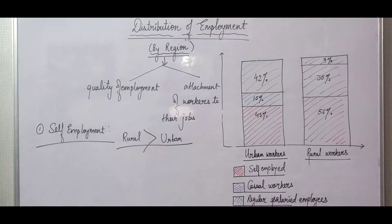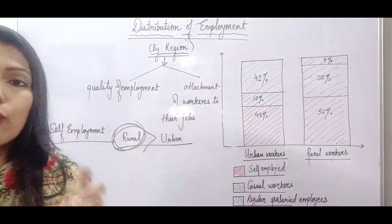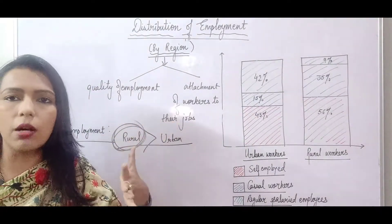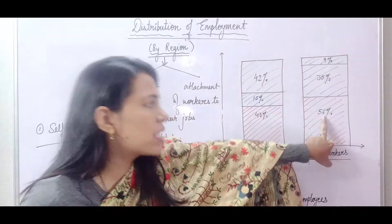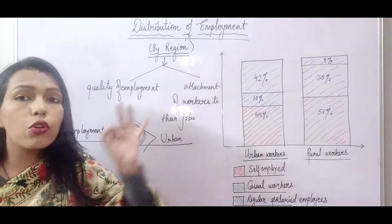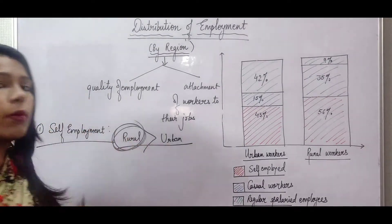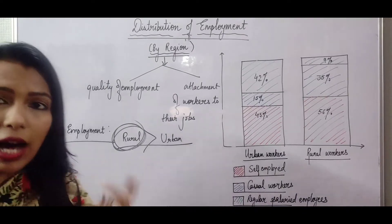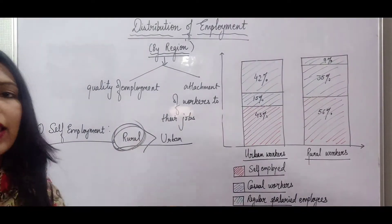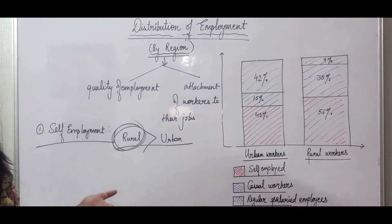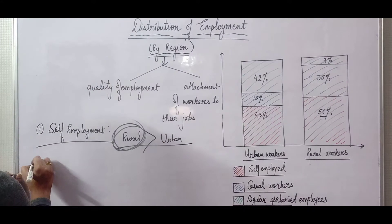This is because in rural areas, the majority of people are engaged in farming activities — they are engaged in their own plot of land. So because the majority of rural people are farming on their own land, it comes under self-employment. This is why the rural self-employment rate is 56%, while urban is around 40% to 53%. This is an important exam question: why are more rural people engaged in self-employment compared to urban people.